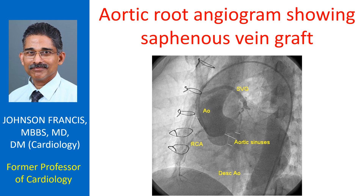The right coronary artery is seen arising from the right sinus and has a tight proximal lesion. Distally, the RCA is totally occluded beyond the right ventricular branches, but that is not clear in this image — it had already been delineated in a selective right coronary angiogram.